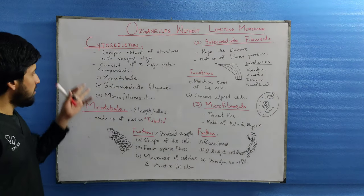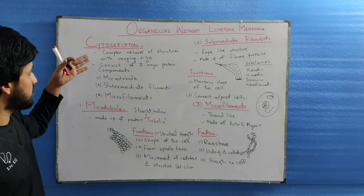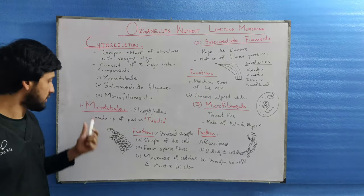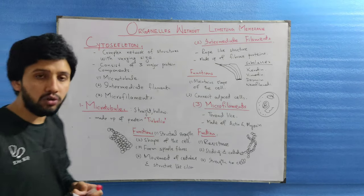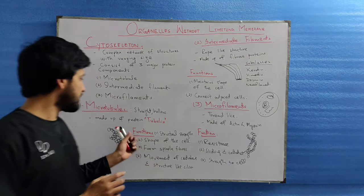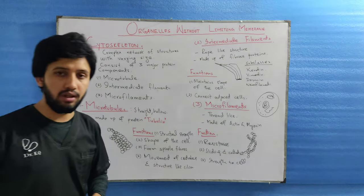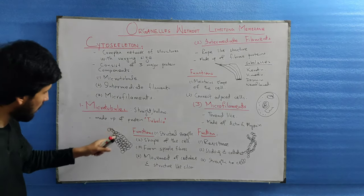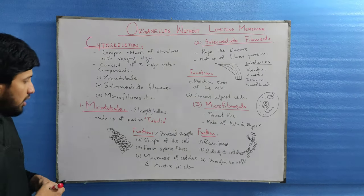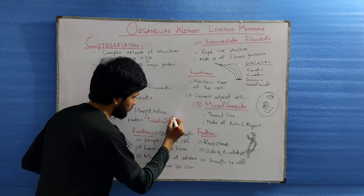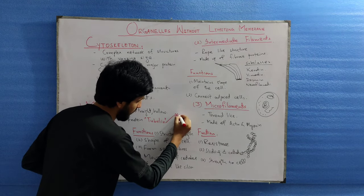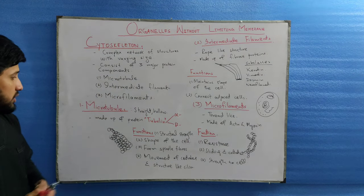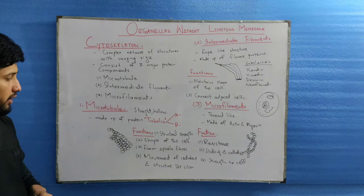There are three major components of the cytoskeleton. The first is microtubules. Microtubules are actually straight and hollow structures made up of a protein called tubulin. Tubulin also has two sub-protein units: the alpha unit and the beta unit. This is the protein which makes up the microtubules.